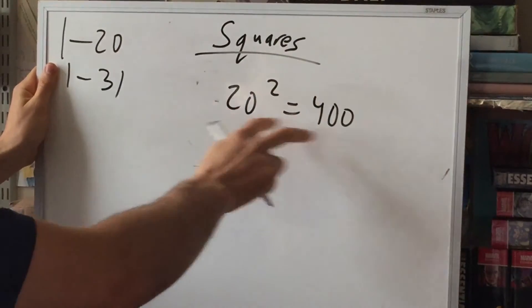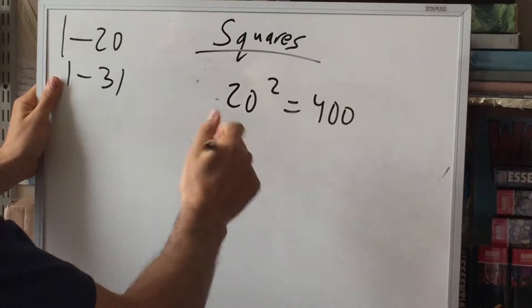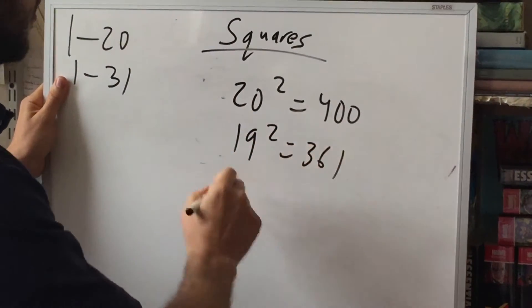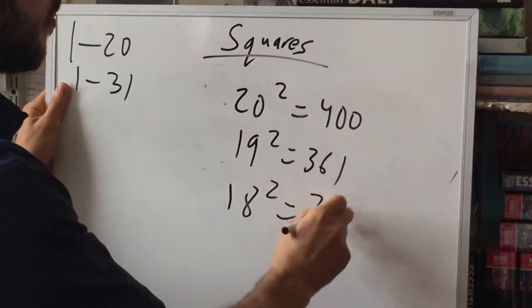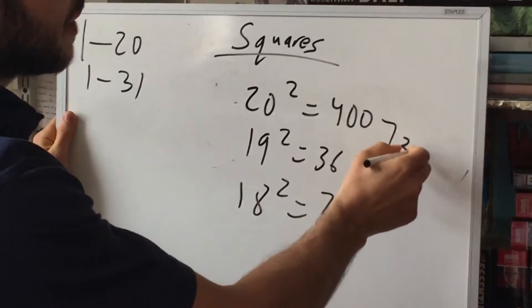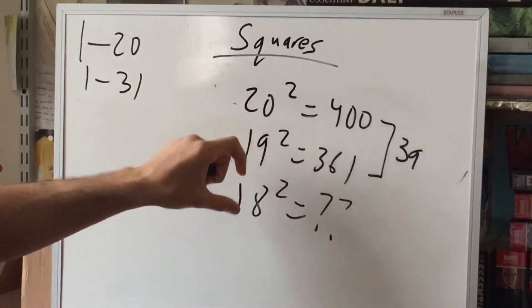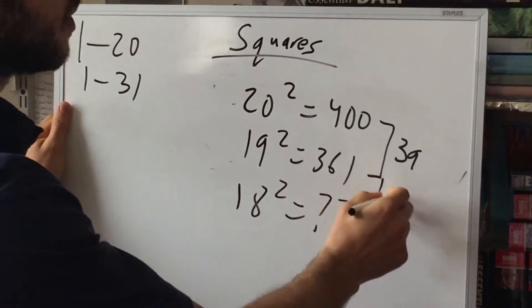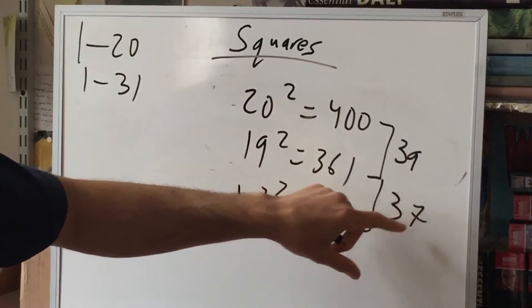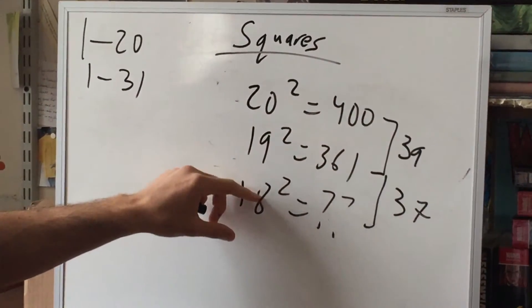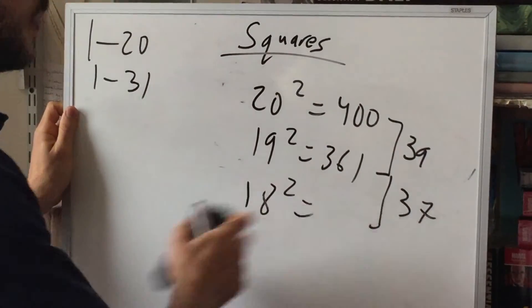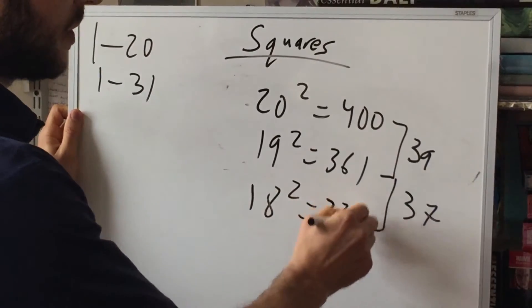So, let's say you know 20 squared is 400, and you know 19 squared is 361, but you forgot 18 squared. This difference is 39, and since now we're actually going backwards, this difference should be 37, because it's the previous odd number. So instead of multiplying this out in your head, you subtract 37 from 361, and hopefully, you get 324.